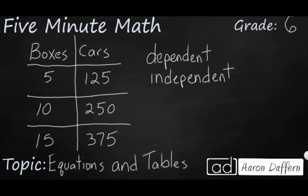So our independent variable is what's going to start things off, and that's going to be our boxes. We'll represent with B because the boxes are the ones that drive this equation. Because as the boxes increase, the cars increase. Because there's so many cars in each box, we're going to represent our cars with C.